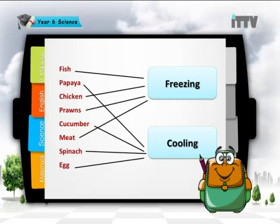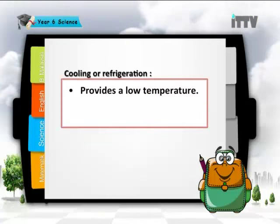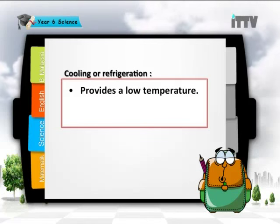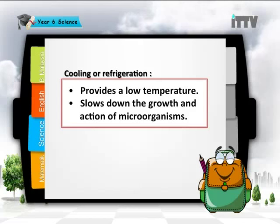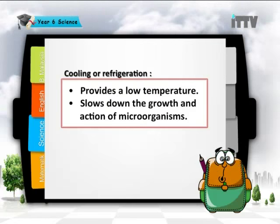Mummy puts eggs and vegetables in the cooling part — do not freeze your vegetables, just put them in the cooling part. Cooling or refrigeration provides a low temperature that slows down the growth and action of microorganisms.